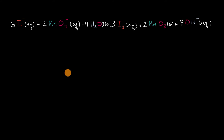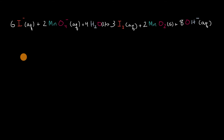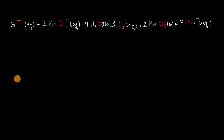Pause this video and see if you can figure that out before we work through it together. Now let's work through it together. The way I suggest you tackle it is to figure out the oxidation numbers for each of the elements as they are entering the reaction and as they are exiting the reaction — on either side of the reaction.